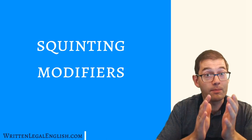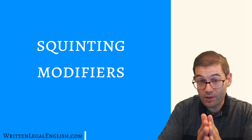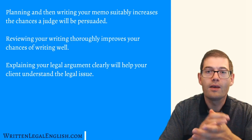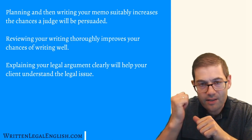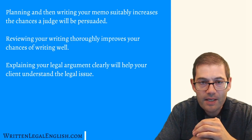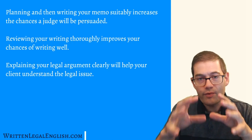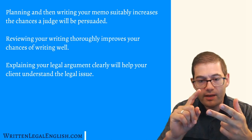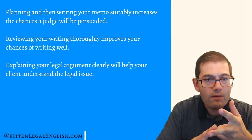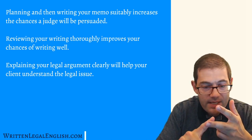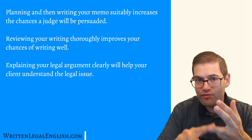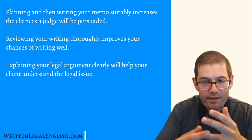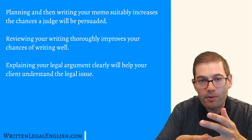You'll find the bit about squinting modifiers somewhere in the middle of that video. So once you know what the problem with squinting modifiers is, have a look at the three sentences that you can see behind me. Read the sentences, identify the squinting modifier, work out what the problem is, and then redraft each sentence to eliminate that problem.